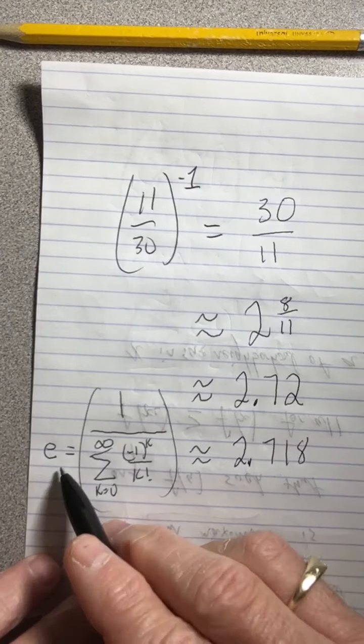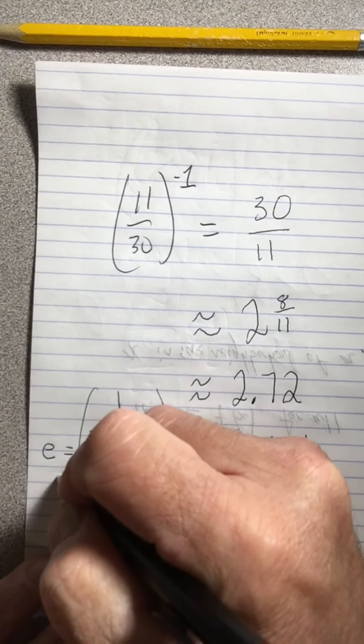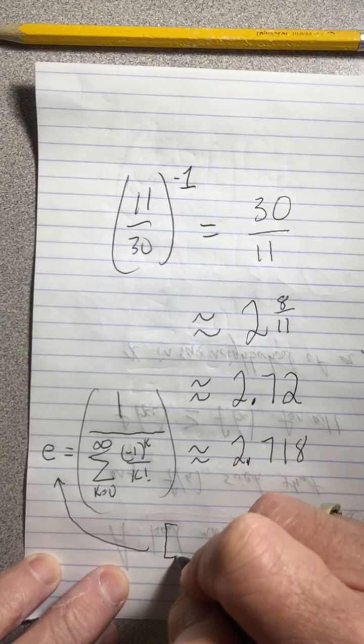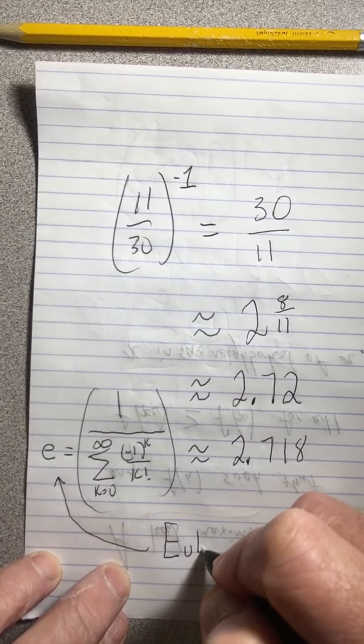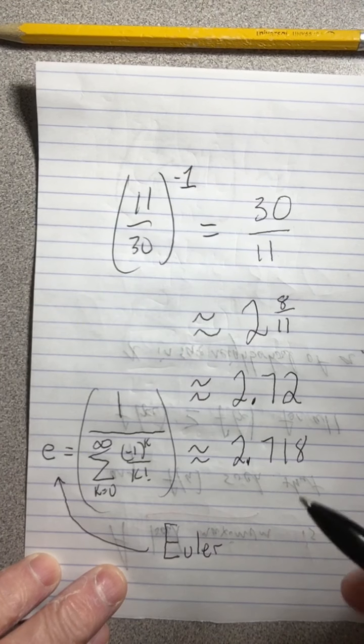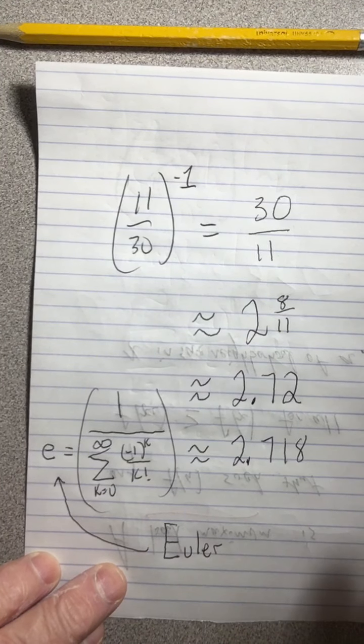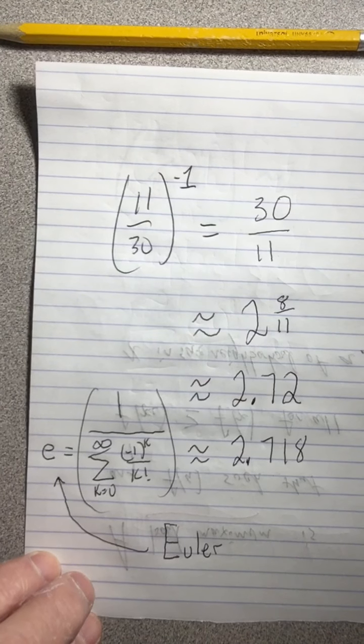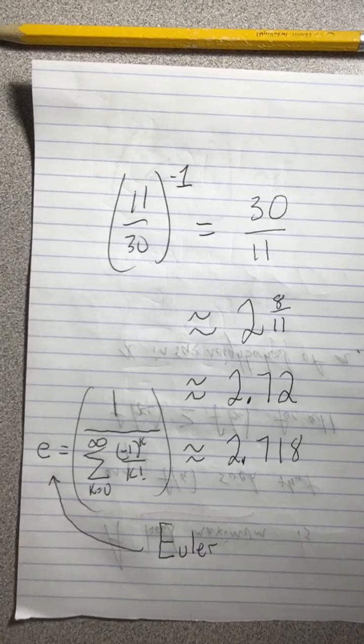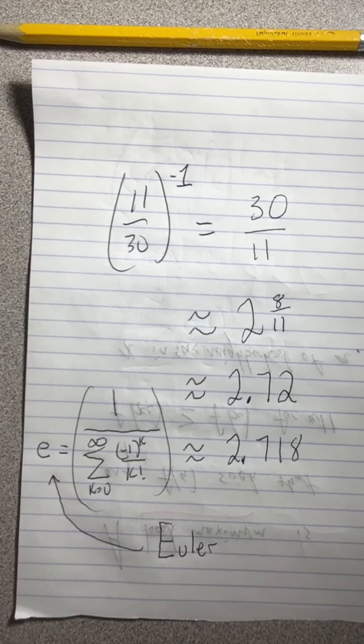Why E? Well, the man that discovered this number and how important it is, his name starts with E. He's a Swiss mathematician. Read about it, he's interesting. You pronounce it Euler because he's Swiss. Math made simple.